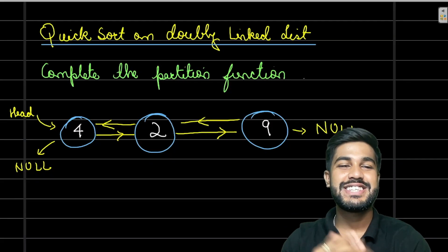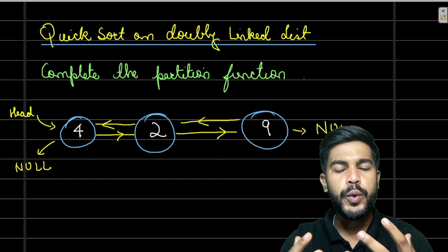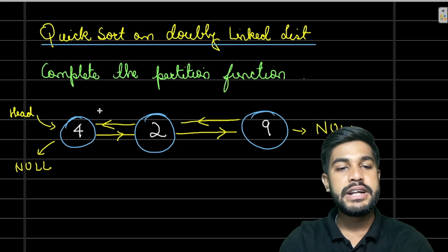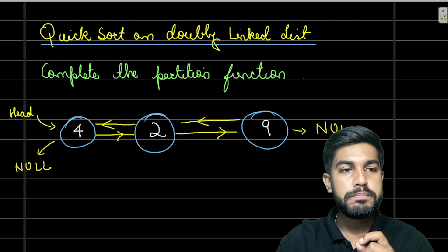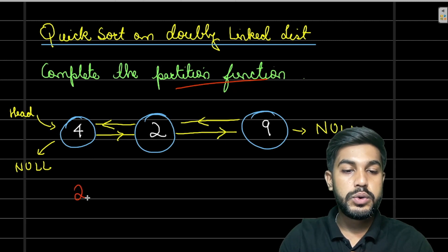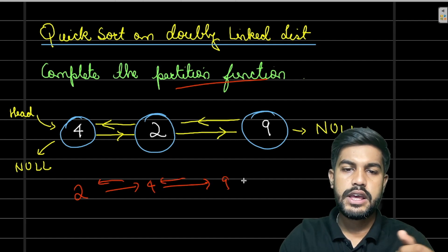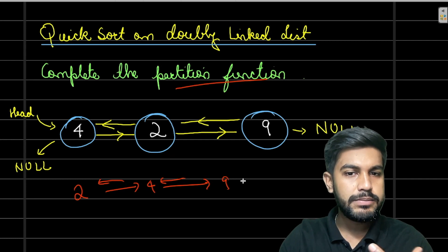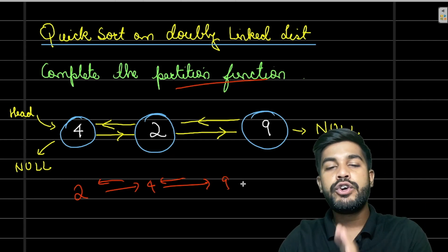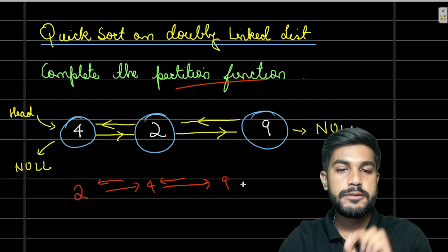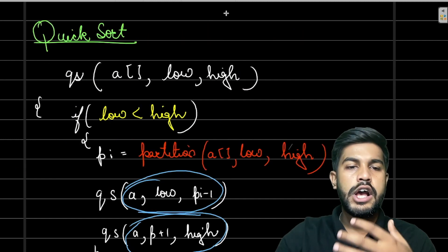Hi and welcome to Geeks for Me. Today we would be discussing the problem QuickSort on Doubly Linked List. In this problem we have already been given the implemented version of QuickSort and we just need to complete the partition function. For example, if given 4, 2, 9 it should become 2, 4, 9 in a doubly linked list. Before moving forward, let us quickly go through the QuickSort algorithm, then the partition function, and then implement it on the doubly linked list.